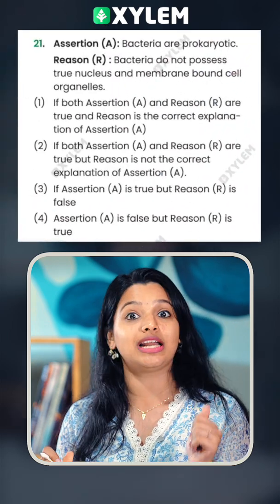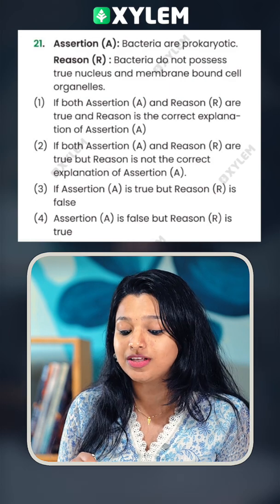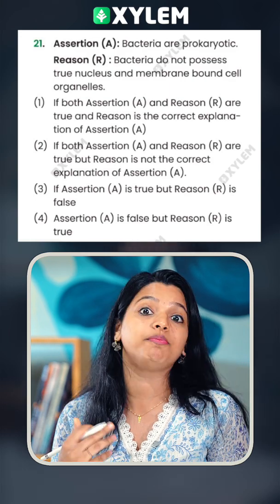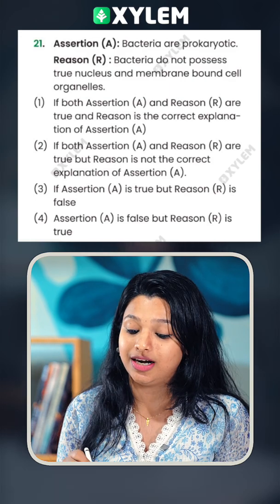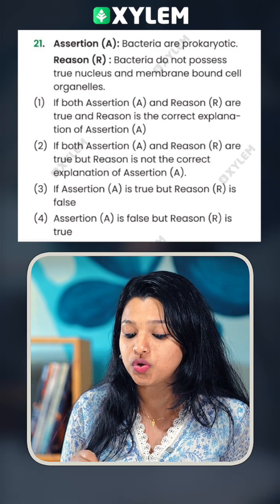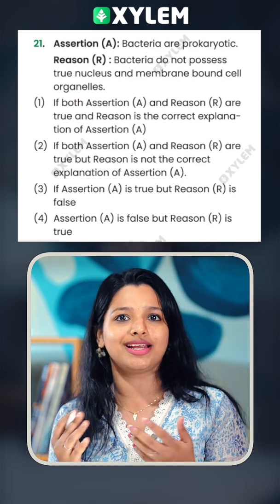Assertion and Reason type of question. Assertion: Bacteria are prokaryotic. Reason: Bacteria do not possess a true nucleus and membrane-bound cell organelles. This is the correct explanation.